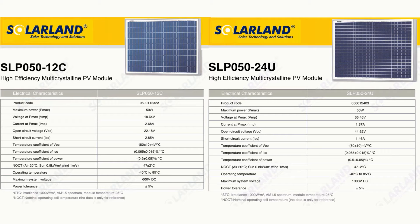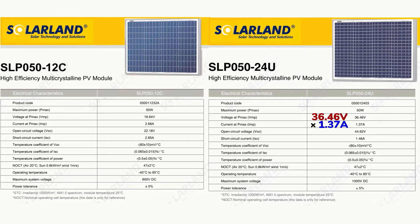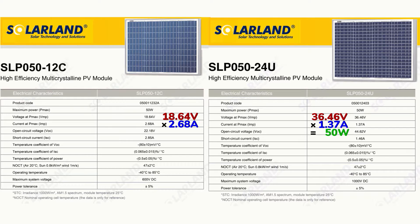As an example, let's consider a solar module producing over 36 volts but only 1.37 amps. If you multiply those two metrics — volts times amps — then you'll have 50 watts. Now let's say another module produces only half that voltage, around 18.6 volts, but double the current at around 2.68 amps. If you multiply those two terms together, you'll again obtain 50 watts. In this case, both solar modules are producing the same amount of power — 50 watts — but each with different volt and amp ratings. The difference is that one will require a heavier gauge wire to carry the higher current. The larger the amp rating, the heavier the gauge of wire needed.